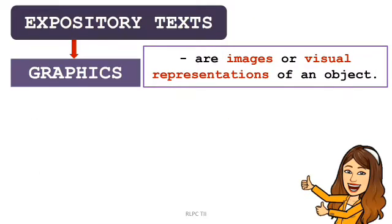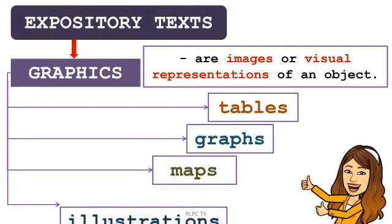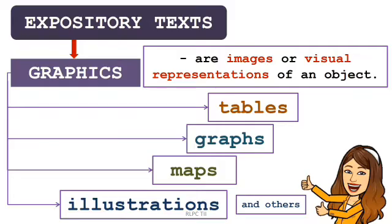Expository texts frequently use graphics to present facts and information. These graphics are images or visual representations of an object. It may include tables, graphs, maps, illustrations, and others.